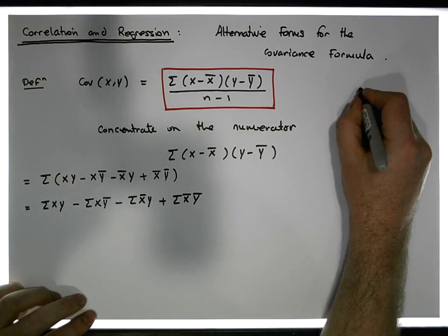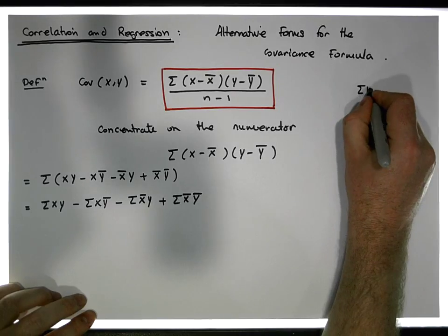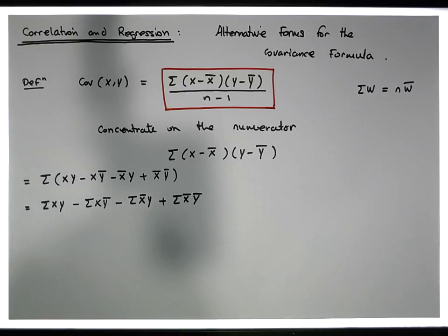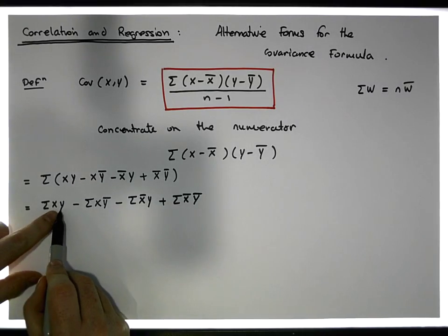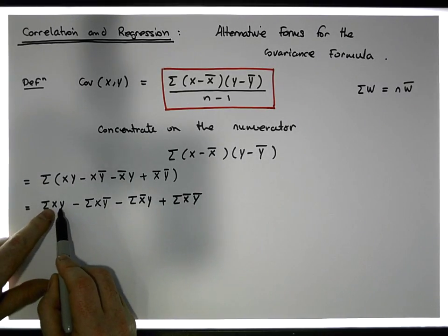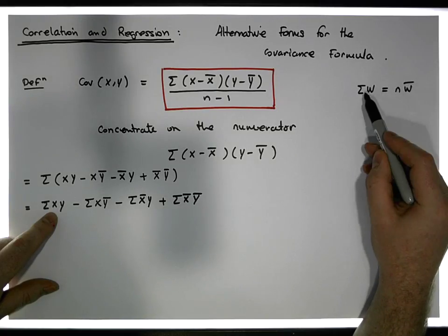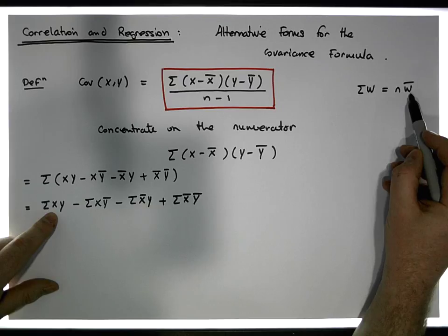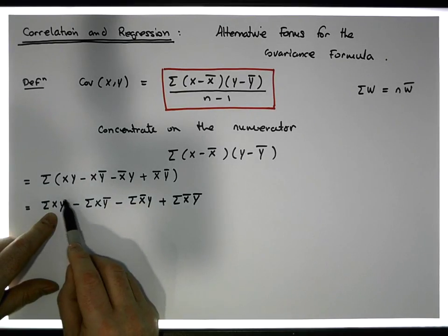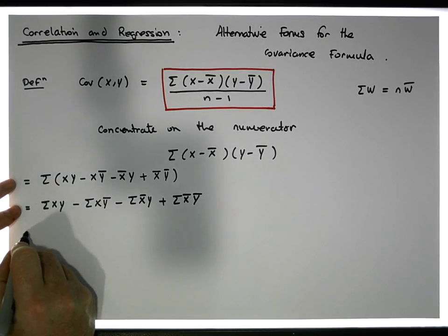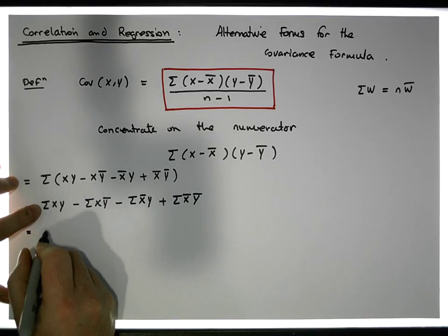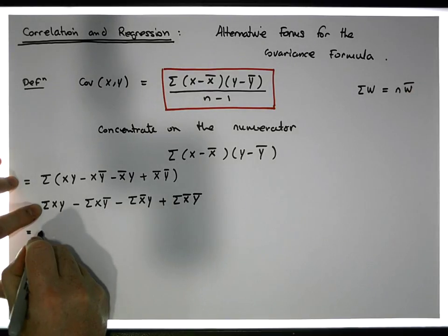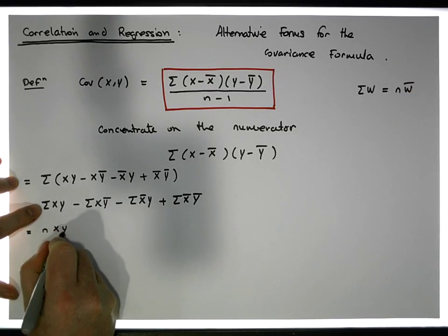Recall that the sum of a variable is the same as n times the average of that variable. So the sum of xy can be converted: since the sum of w equals n times the average of w, in this case w is xy, so the sum of xy equals n times the average of xy — written as n times x̄y̅.